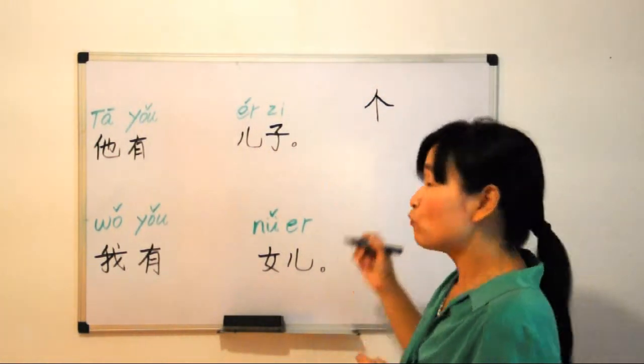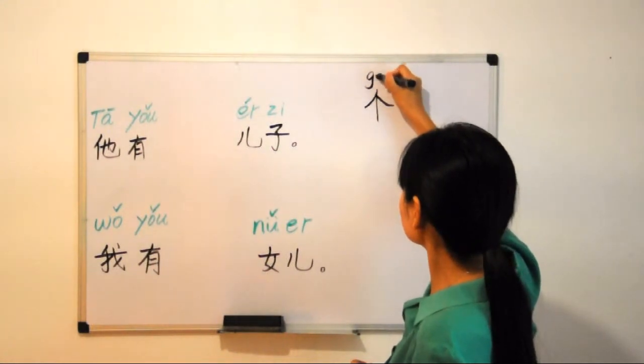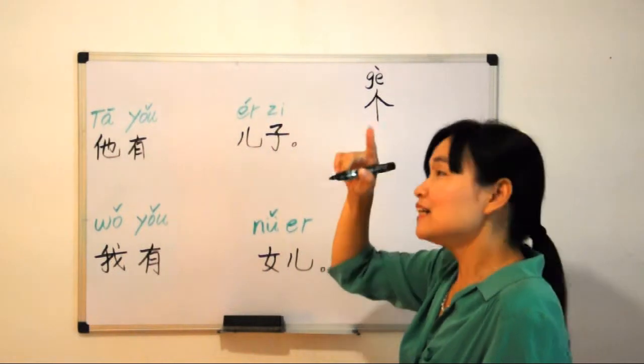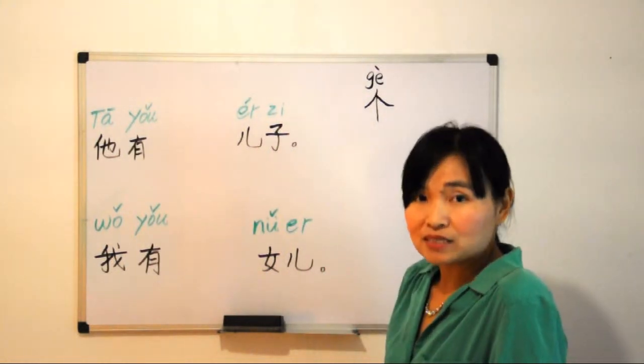Which tone do you know? Fourth tone, right? Ge, ge, ge. So one person, we say 一个人 (yí gè rén).